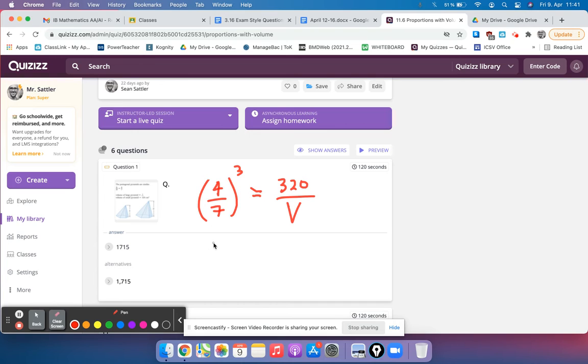So then to solve this, just cube. 4 cubed is 64, and 7 cubed, just use your calculator, 7 times 7 times 7 is 343.